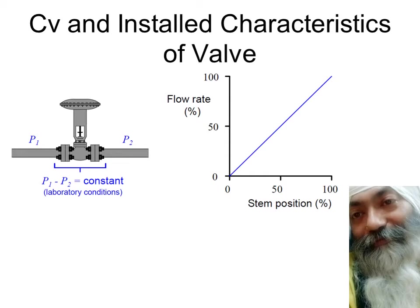After having discussed the CV part, we now come to what are the installed characteristics of a valve. You have inherent characteristics and then you have installed characteristics. In the case of inherent characteristics, the pressure drop across the valve is supposed to be constant. This constant pressure drop is only achievable under strict laboratory conditions where you actually maintain the pressure drop across the valve to measure the characteristics. Under normal industrial conditions, this pressure is not constant.